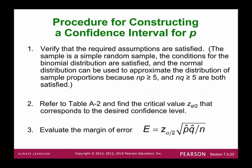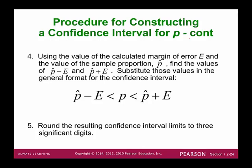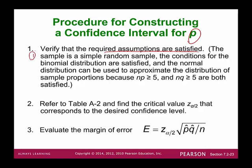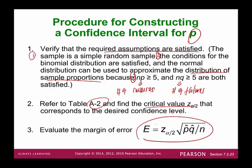The procedure for constructing a confidence interval for population proportion P: Step 1 — verify all assumptions are satisfied: simple random sample, binomial distribution conditions met, and we use the normal distribution to approximate the sampling distribution. Also verify that n times p-hat (number of successes) and n times q-hat (number of failures) are both greater than or equal to five. Step 2 — refer to Table A2 to find the critical value z alpha over 2.